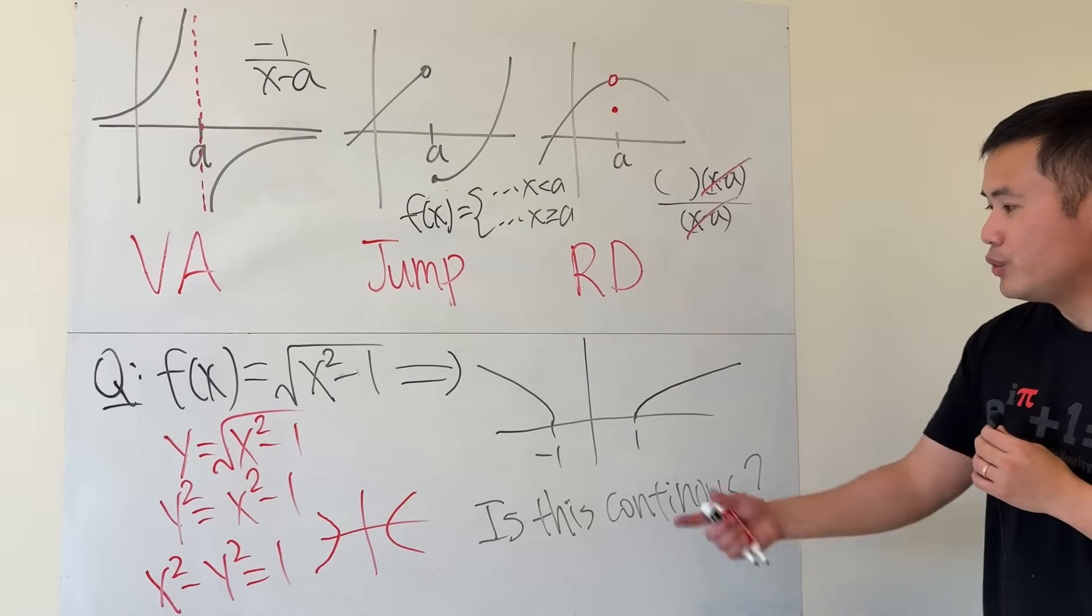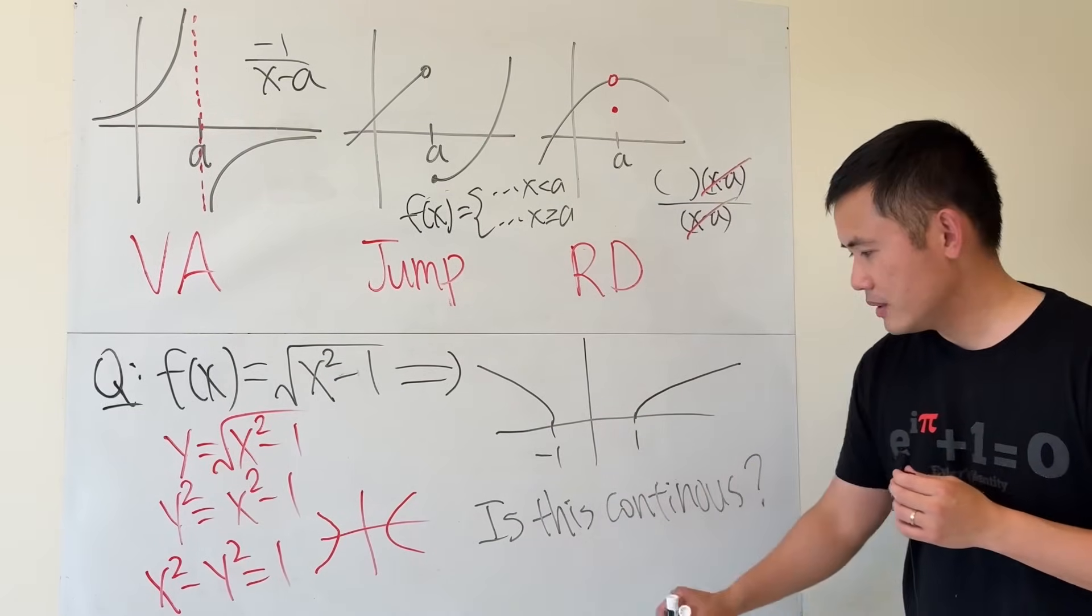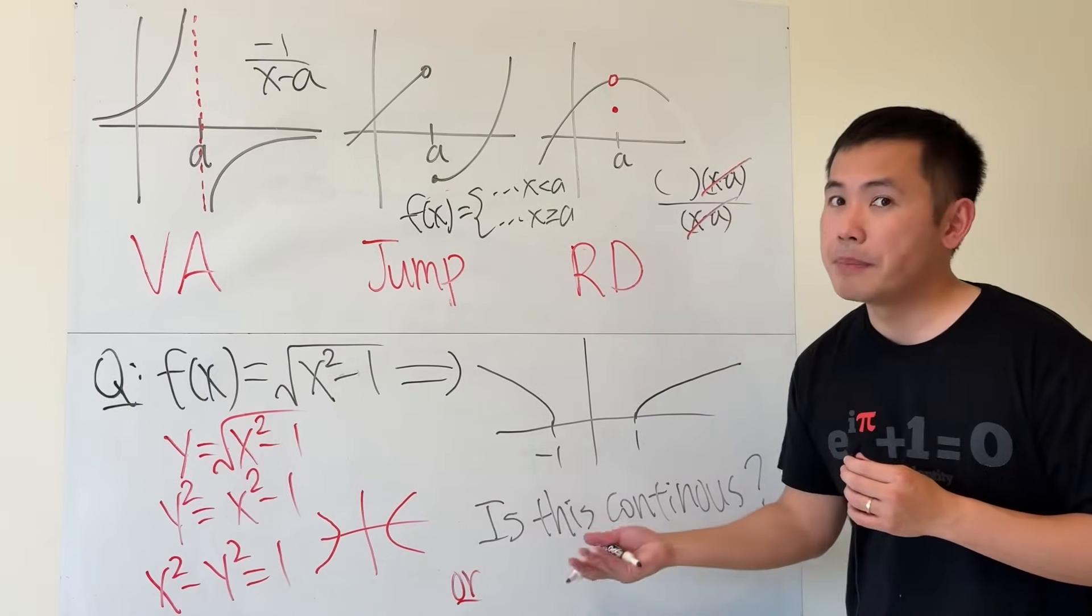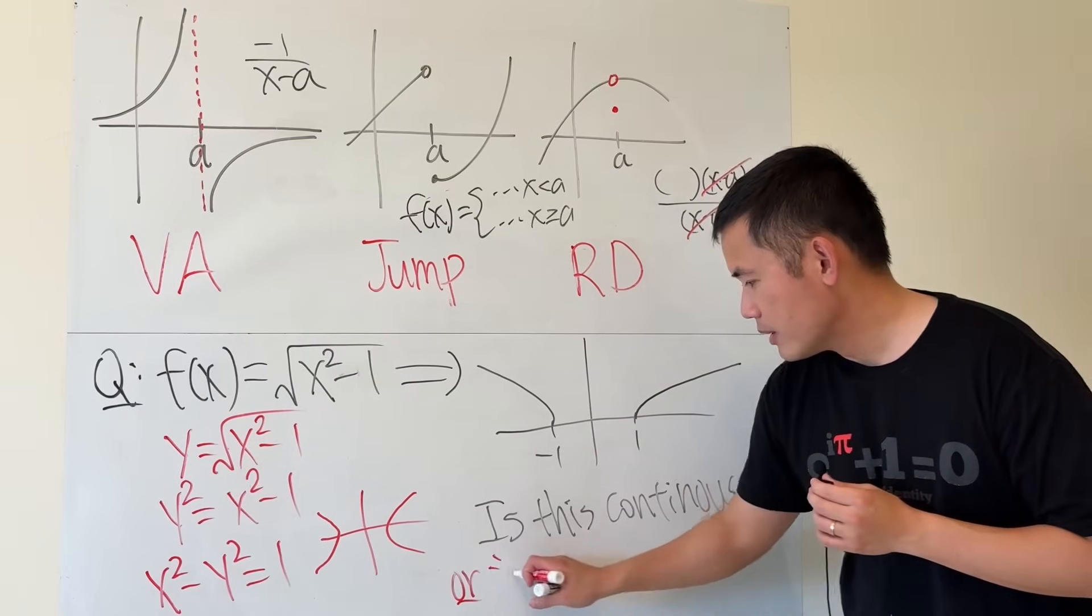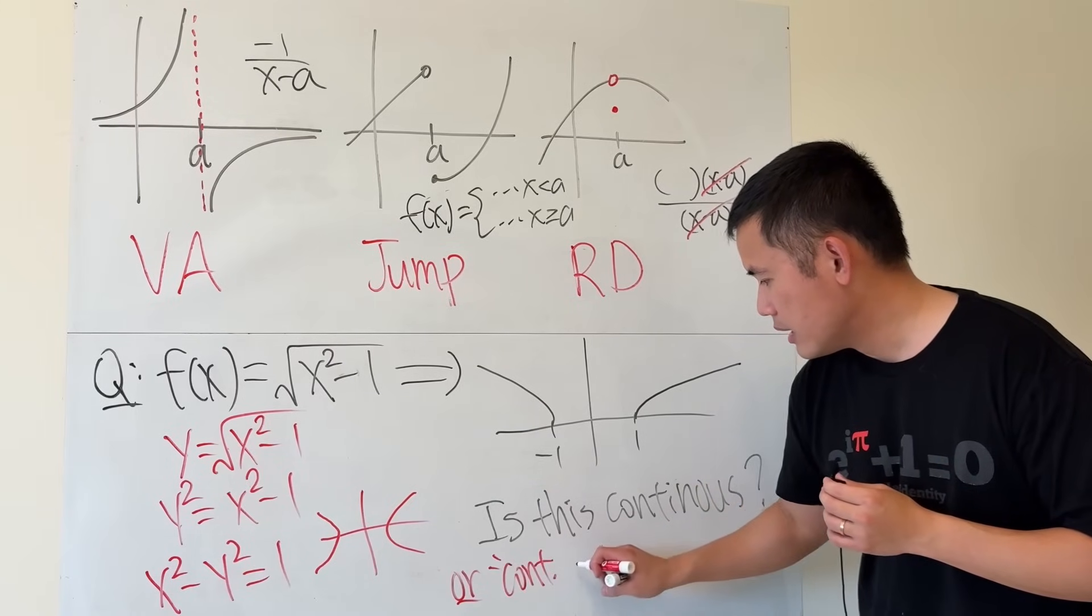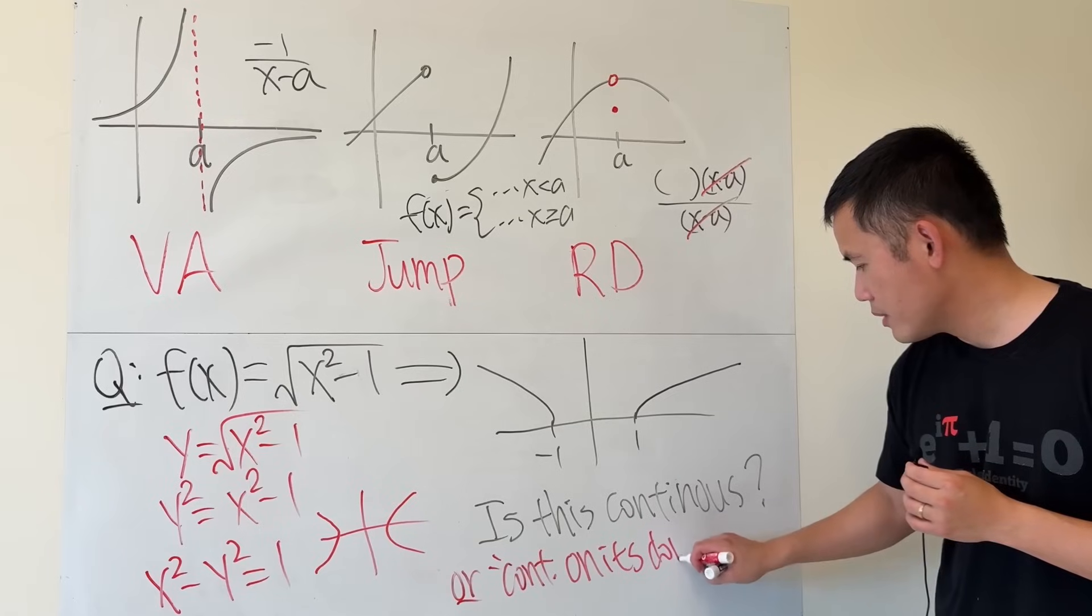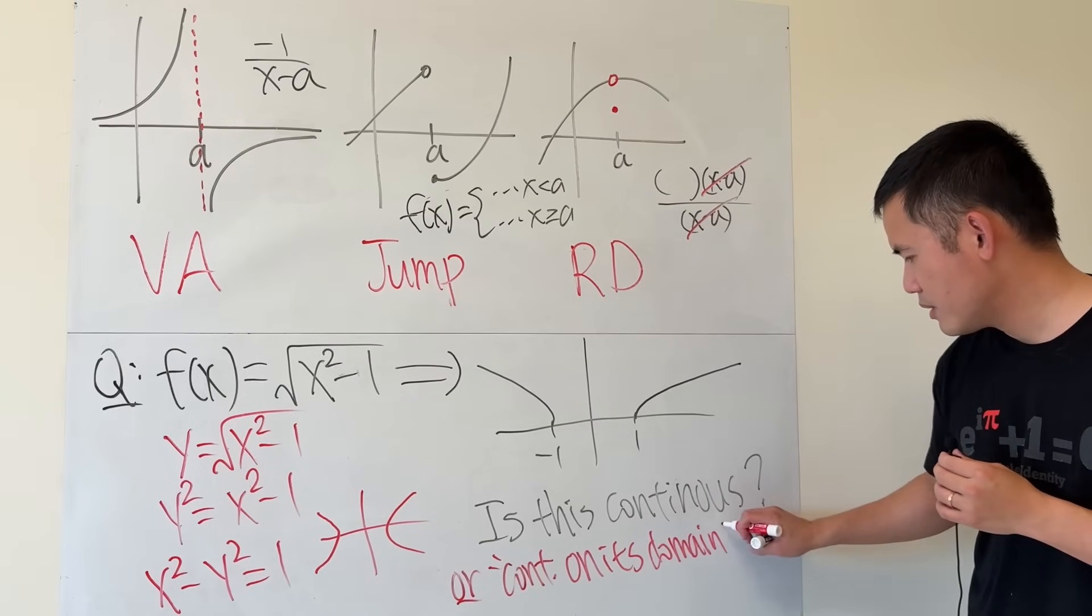Or, yeah. What do you really want to say? This is continuous. I want to just say, or, this is one way that people would say continuous on its domain. Do you say that?